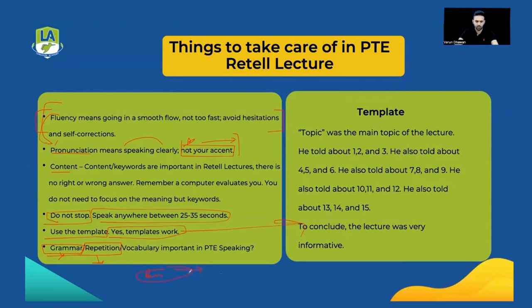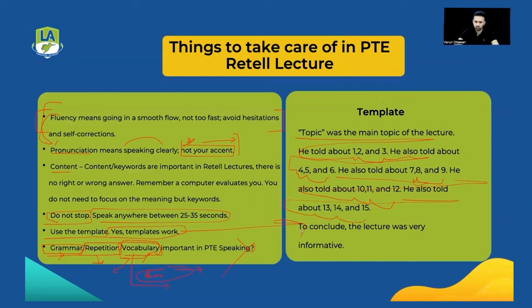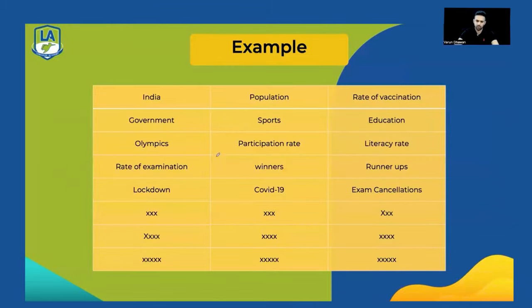For vocabulary, don't use fancy words in PTE speaking — use simple words. The kids who use heavy words don't score well. Easy words are fine. For the template: 'Key word one was the main topic of the lecture. He told about keyword two, keyword three. He also told about keyword four, keyword five, and keyword six. He also told about keyword seven, keyword eight, and keyword nine. He also told about keyword ten, eleven and twelve. To conclude, the lecture was very informative.'